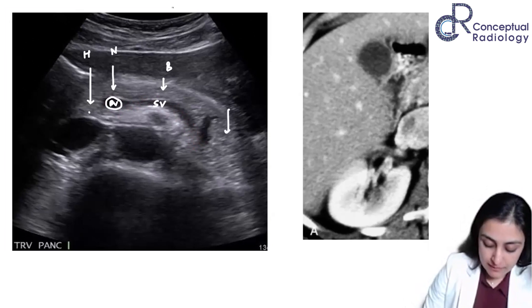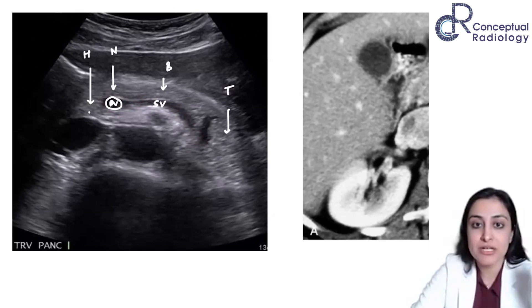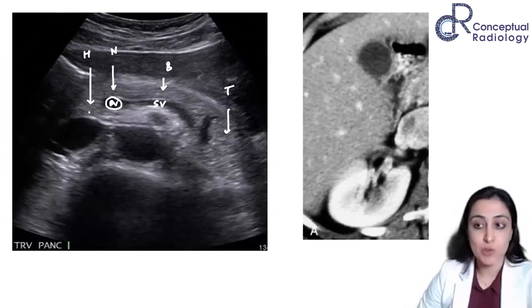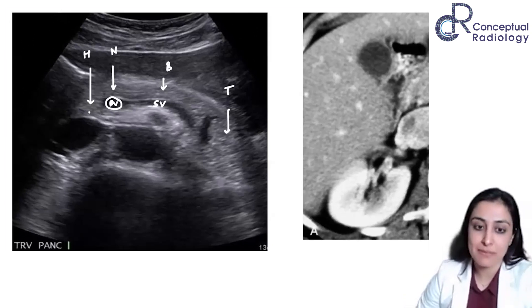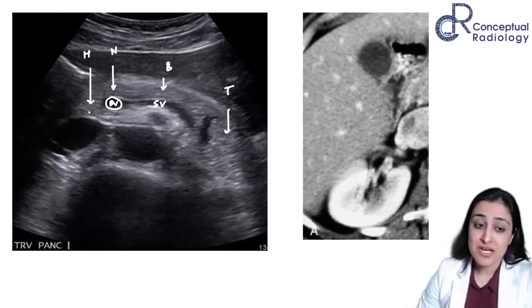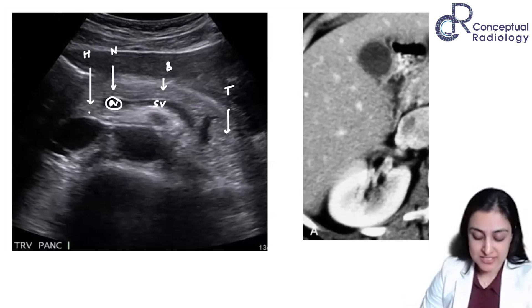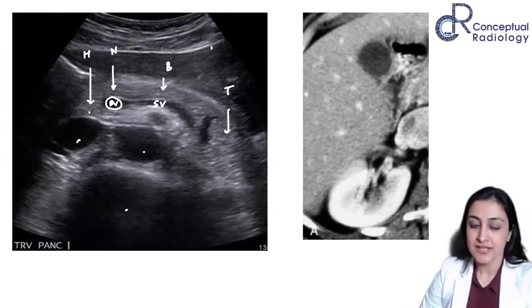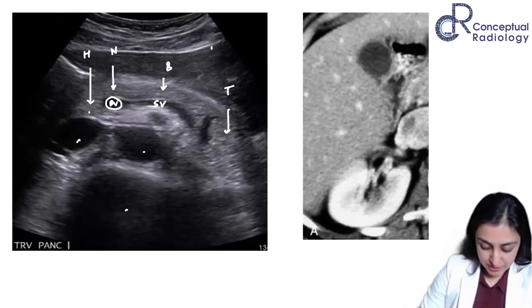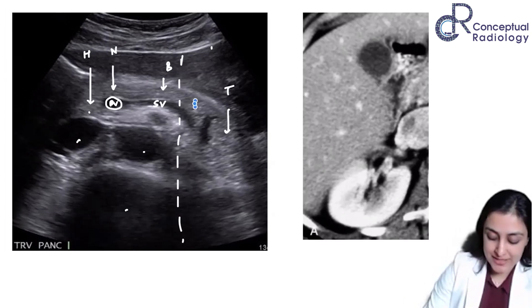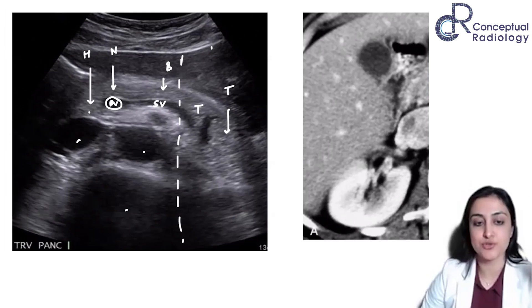My next question is: what is body and what is tail? Where does the body become tail? What is the anatomical landmark for body and tail? This is something I've seen many students not know. It can't be splenic artery, can't be splenic vein. The landmark is the lateral border of the vertebral body. You can see this is the vertebral body — the lateral border of the vertebral body is where the body of the pancreas becomes the tail.